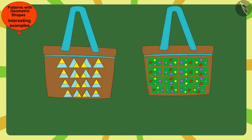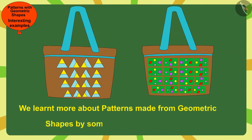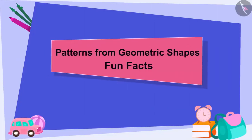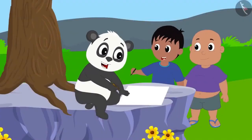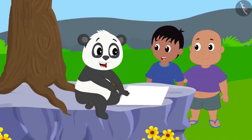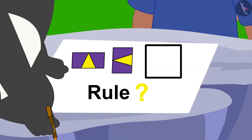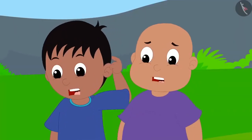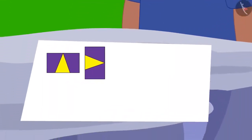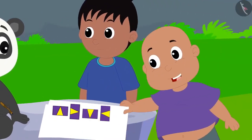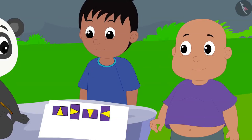Hello children. In the previous video, we learned more about patterns made from geometric shapes by some interesting examples. In this video, we will see some fun facts related to this. Raju, Bablu and Golu are playing a unique game. Golu will show a pattern and Raju and Bablu must find the rule of that pattern and complete it. Raju said, I completed your pattern by rotating the block a quarter at a time in the clockwise direction. Bablu said, I made this pattern by rotating the block three times in a counter-clockwise direction each time.